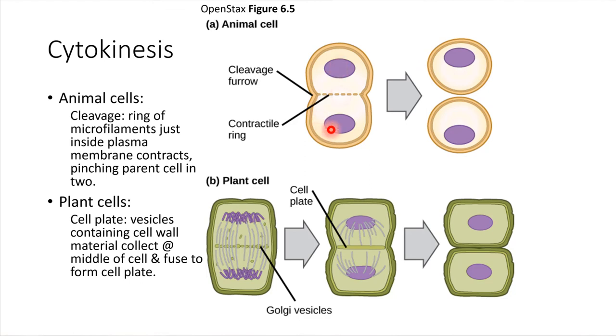Here's the other new nucleus that's just formed. What happens in animal cells is that the plasma membrane just starts to pinch inwards. We say that it forms a cleavage furrow.